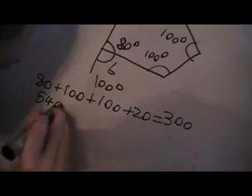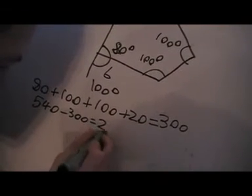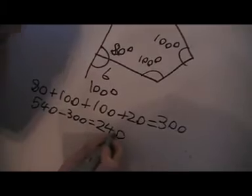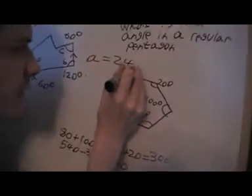So 80 plus 20 is 100. 100 plus 100 is 200. That's 300. Subtract 300 from 540, we'll get 240. So A equals 240 degrees. That's your solution.